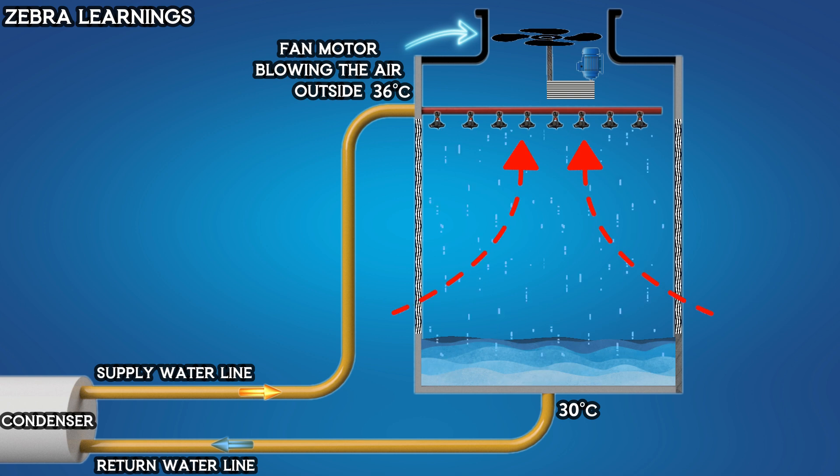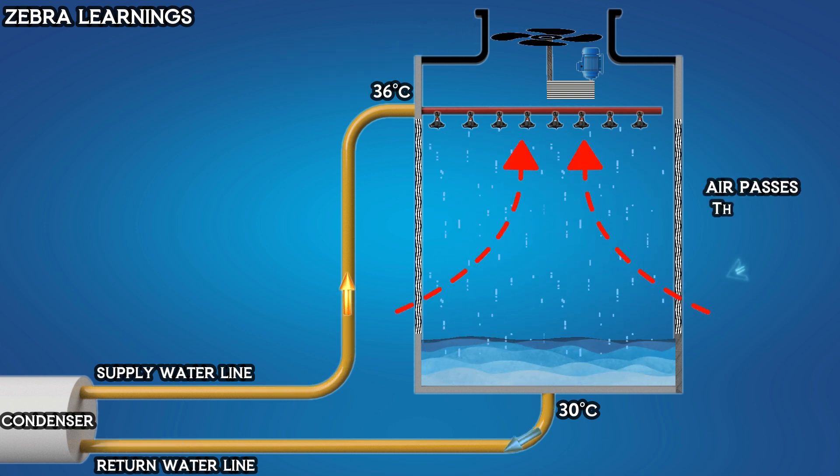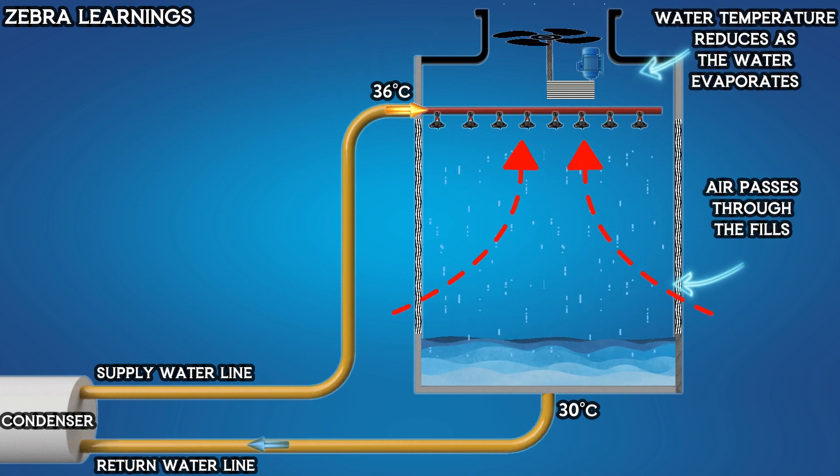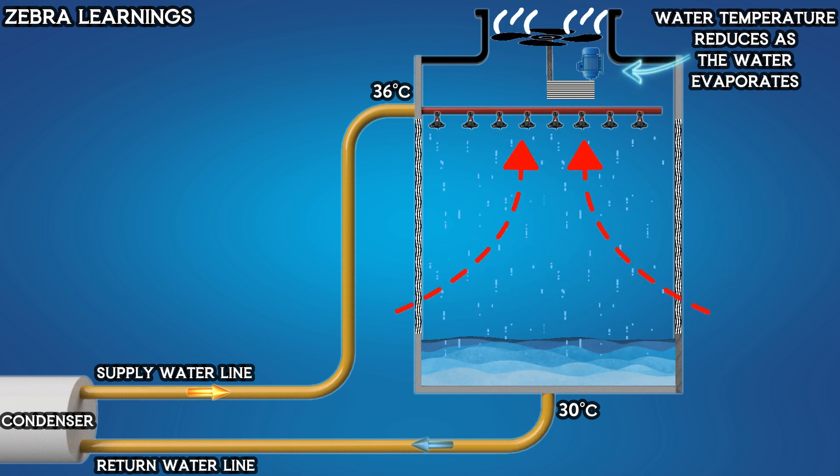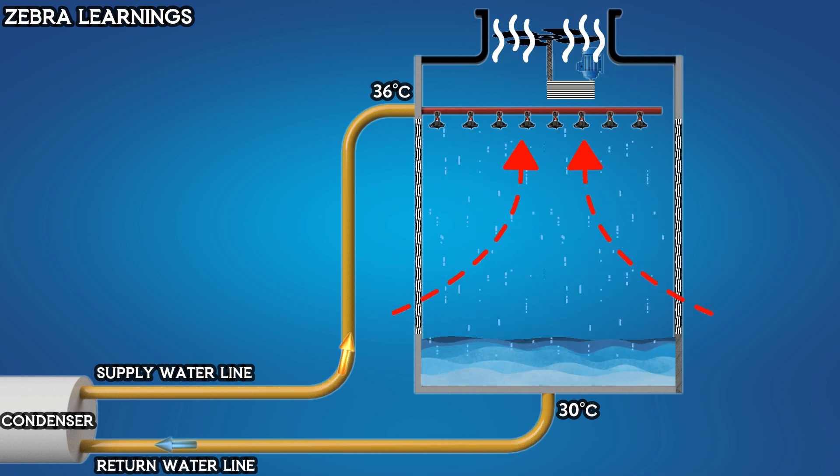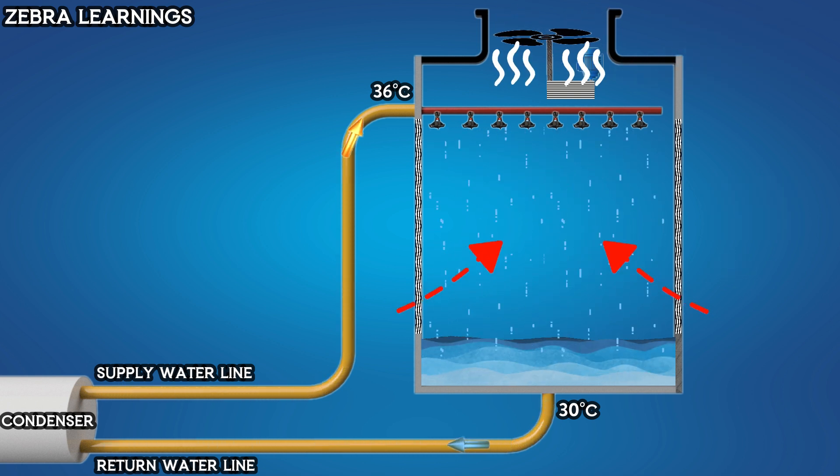The fan motor in the cooling tower draws air upwards through the fills. As the air passes through the fills, some of the water evaporates and is carried away by the air, cooling the water. This cooled water is then returned to the chiller.